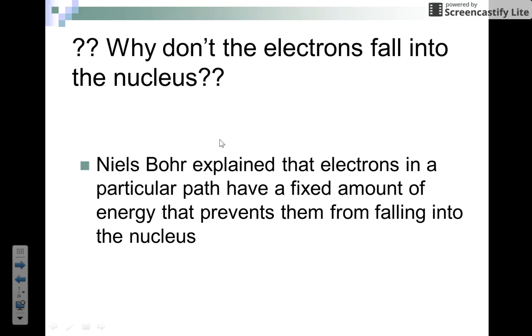That's where Niels Bohr came in and explained that electrons are in a particular pathway. He called them energy levels. He said they travel in orbits and have a fixed amount of energy, which kept them from falling into the nucleus. Bohr gave us the concept of an energy level within our atoms. His model was called the planetary model because he likened the electrons orbiting the nucleus much like the planets orbit the sun.